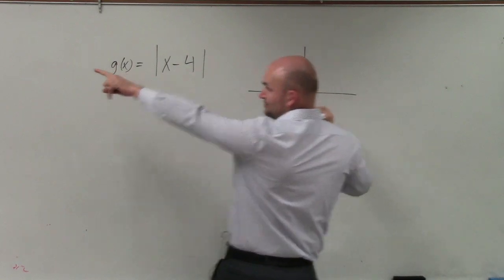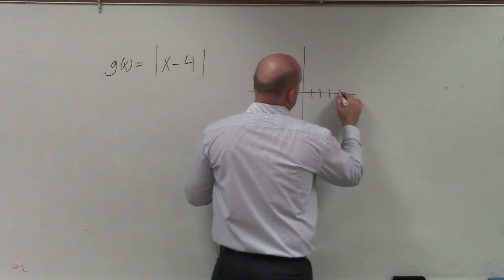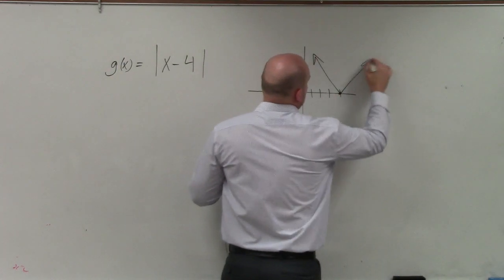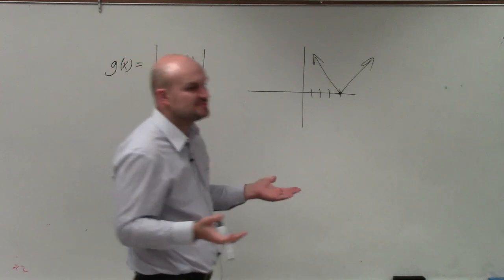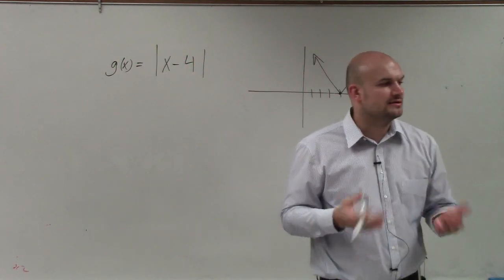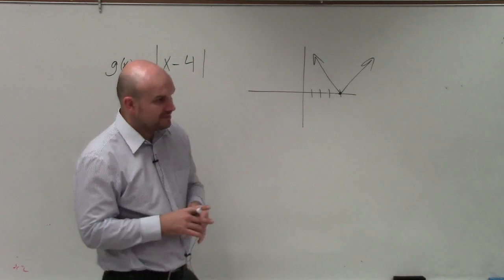Typically you have your absolute value function, which is now just being shifted four units to the right. So your graph should look something like that. If not, make sure you go to Zoom, then option six, which is Zoom Standard, and you should see something just like that.